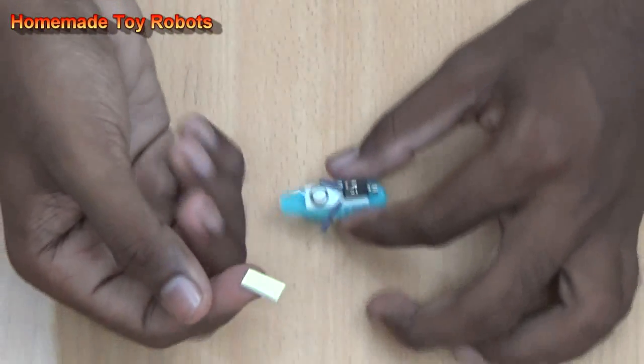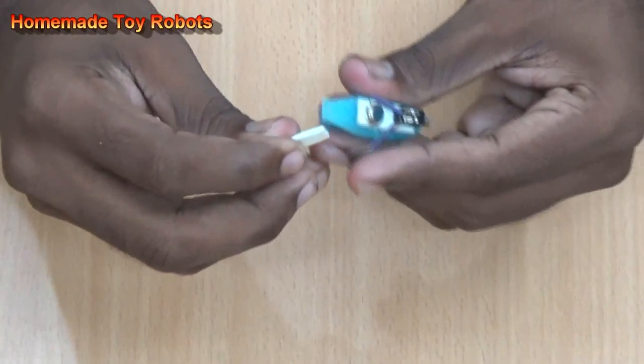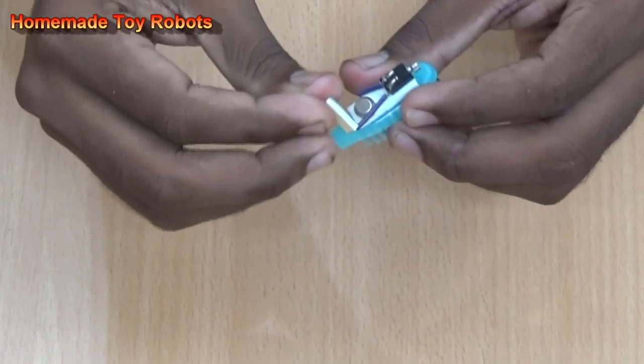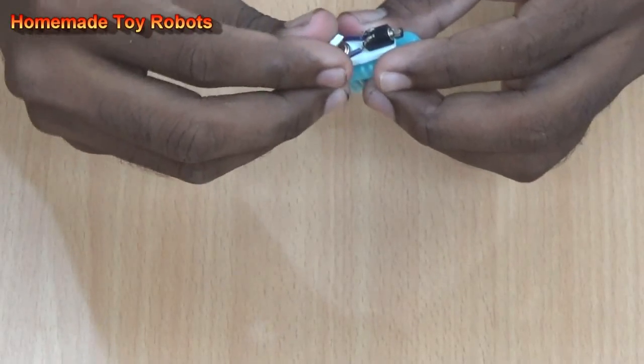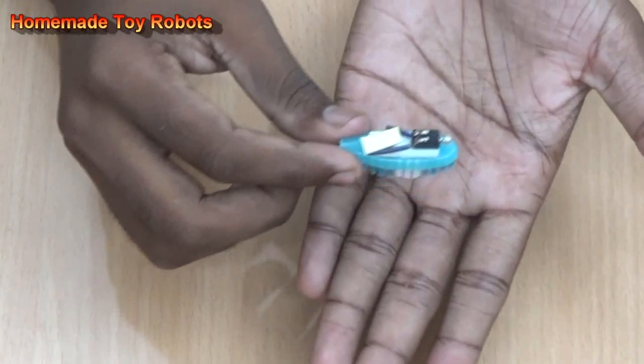Now stick one more small size of tape and place the top. Now stick it like this. Our bristle bot is ready to use.